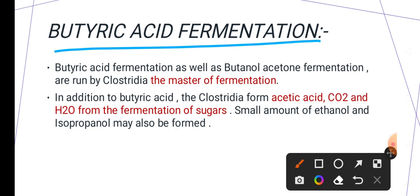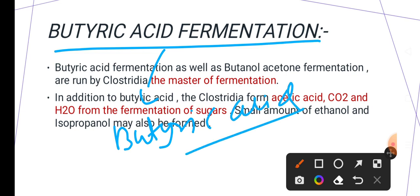Butyric acid fermentation is the type of fermentation where butyric acid is produced as the main end product. Along with that, you may also find acetic acid, CO2, and H2O, and also isopropanol and ethanol as end products.